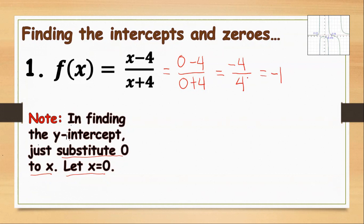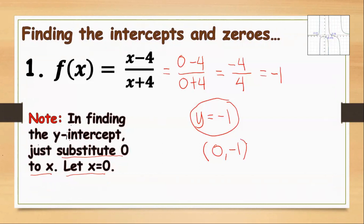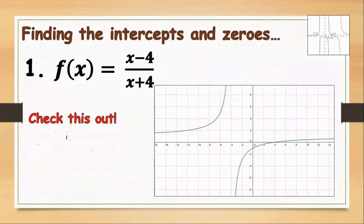Negative divided by positive is negative, so we get negative 1. Our y-intercept is y equals negative 1, or as a point, (0, negative 1). Looking at our graph, the x-intercept is at positive 4 and the y-intercept is at negative 1 — our solution is correct.